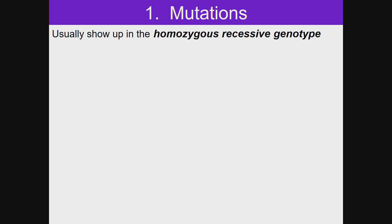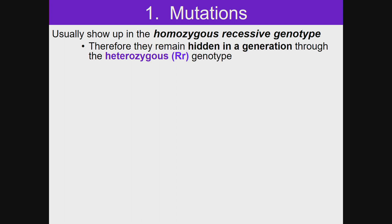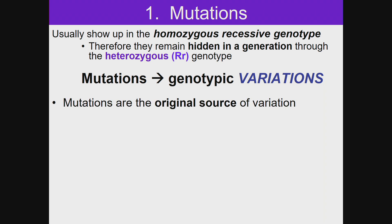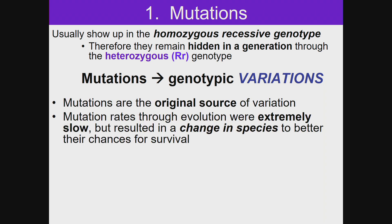Mutations usually show up in the homozygous recessive genotype, so they remain hidden in a generation through the heterozygous genotype. Mutations can result in genotypic variations and are the original source of variation. Mutation rates through evolution were extremely slow, but resulted in changes in species to better their chances for survival.